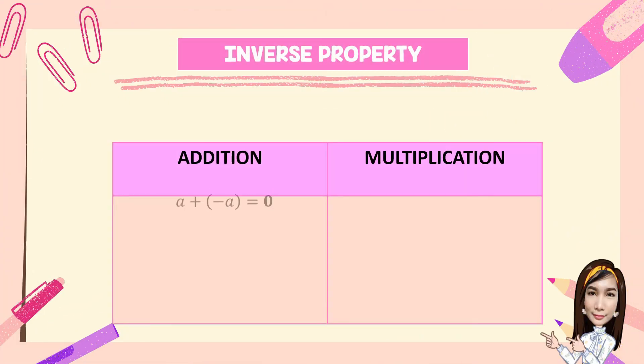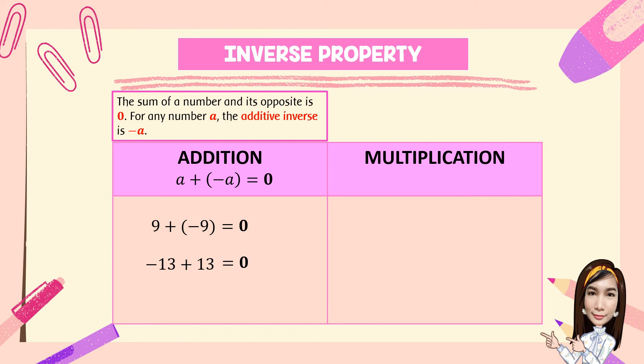For the last, we have the inverse property. For addition: A plus negative A is equal to 0. For example, 9 plus negative 9 is equal to 0, and negative 13 plus 13 is equal to 0. So the sum of a number and its opposite is 0. For any number A, the additive inverse is negative A. So A plus negative A is equal to 0.